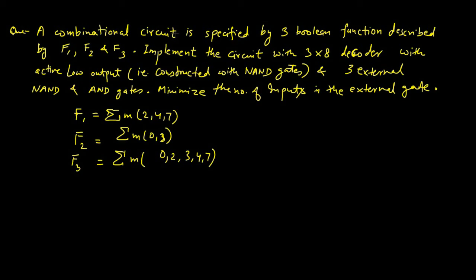The next question involves a combinational circuit specified by three Boolean functions f1, f2 and f3. We implement the circuit using a 3-to-8 decoder with active-low output. Since the outputs are active-low, we use NAND gates — specifically three external NAND gates.